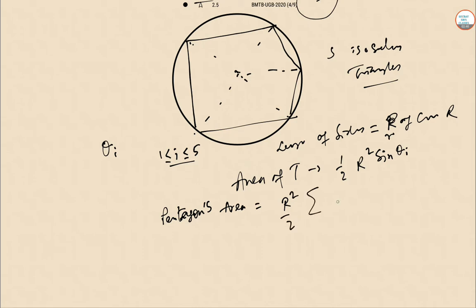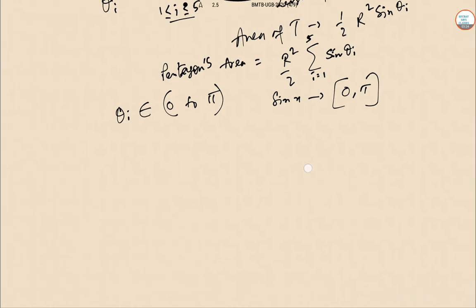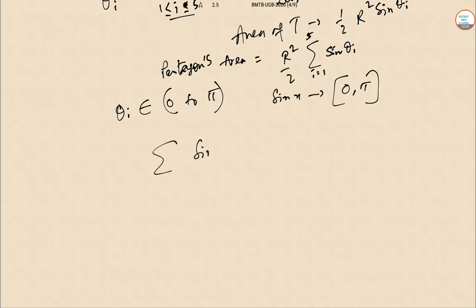r squared by 2, summation of sine theta_i, where obviously i equals 1 to 5. Now we have theta_i lies between 0 to pi, that is 180 degrees, and the function x tends to sine x. Sine x lies between 0 to pi also. So now summation of sine theta_i less than or equal to sine of summation theta_i by 5, equal to sine 2π/5. So we have this sin theta_i equal to 2π already.